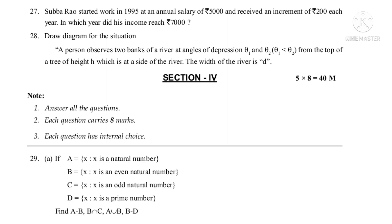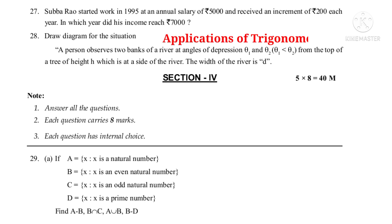Question 27: Superho started work in 1995 at an annual salary of 5,000 rupees and received an increment of 200 rupees each year. In which year did his income reach 7,000 rupees? — from Progressions. Question 28: Draw a diagram for the situation where a person observes two banks of a river at angles of depression θ₁ and θ₂ from the top of a tree of height h, which is at the side of the river. The width of the river is d — from Applications of Trigonometry.